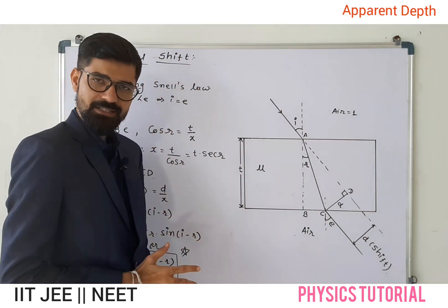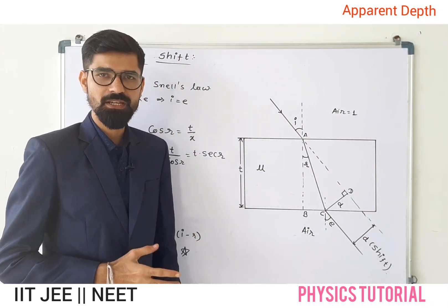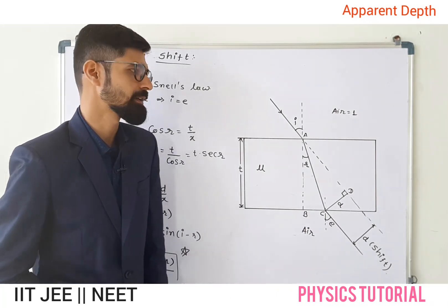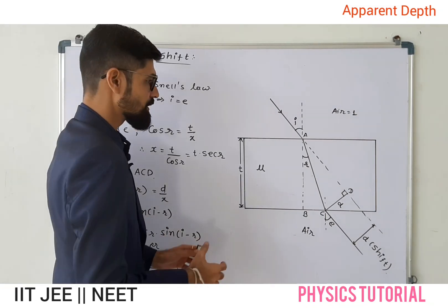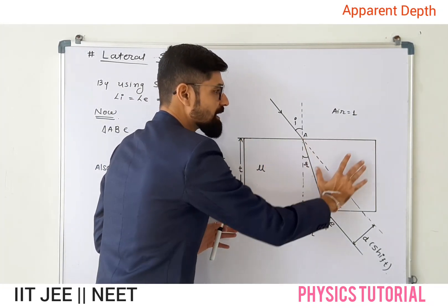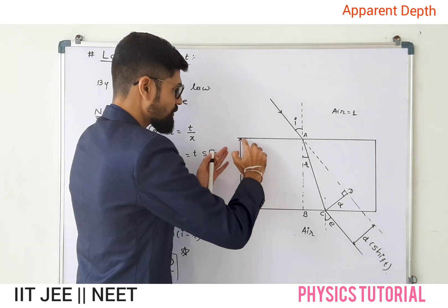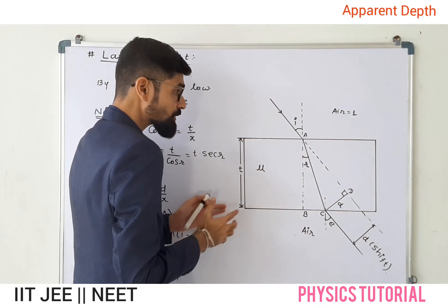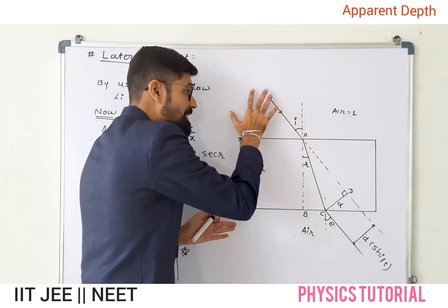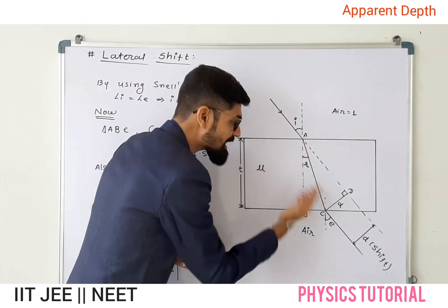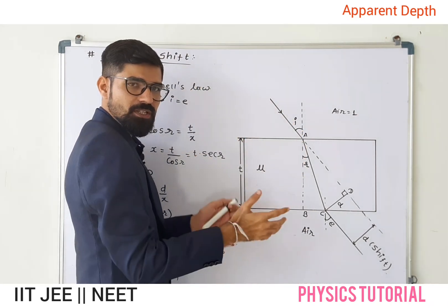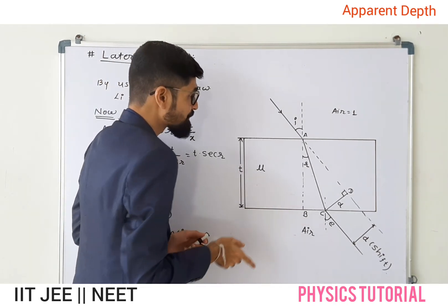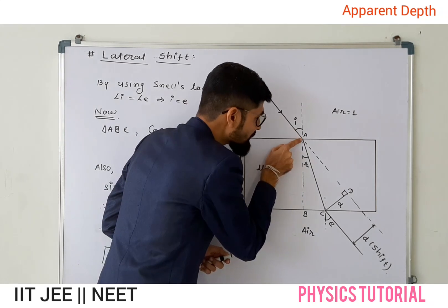It is important to understand with pen and paper, so note down here. Look at a glass slab which is a rectangular medium. When a light ray travels from air to the medium, and from the medium back to the air.